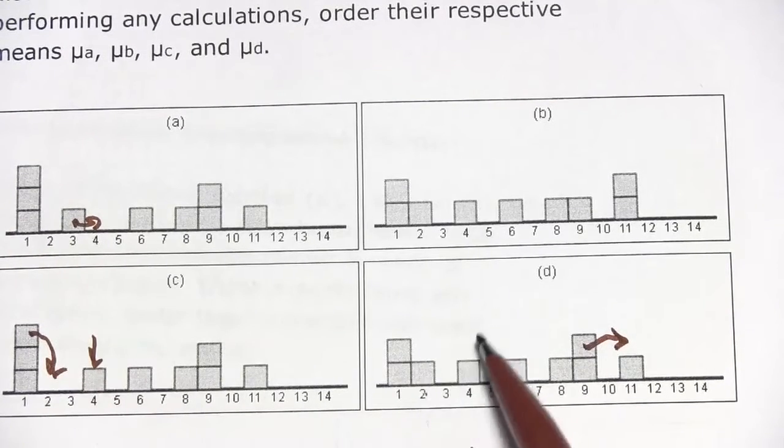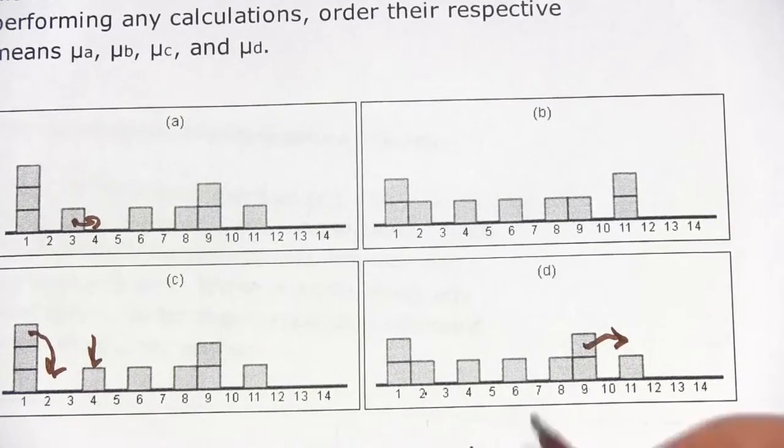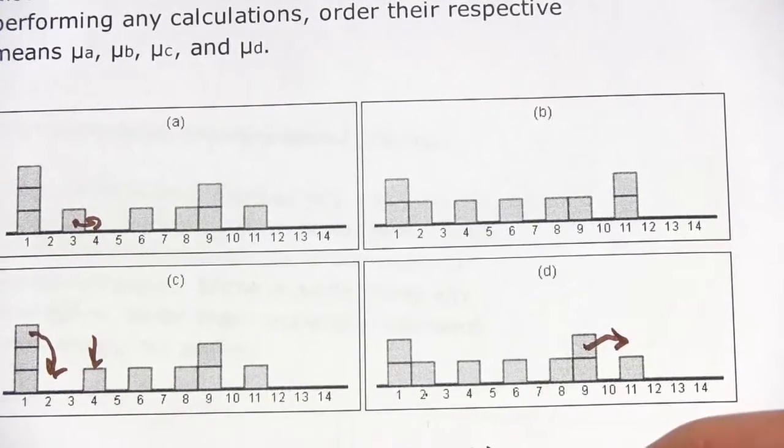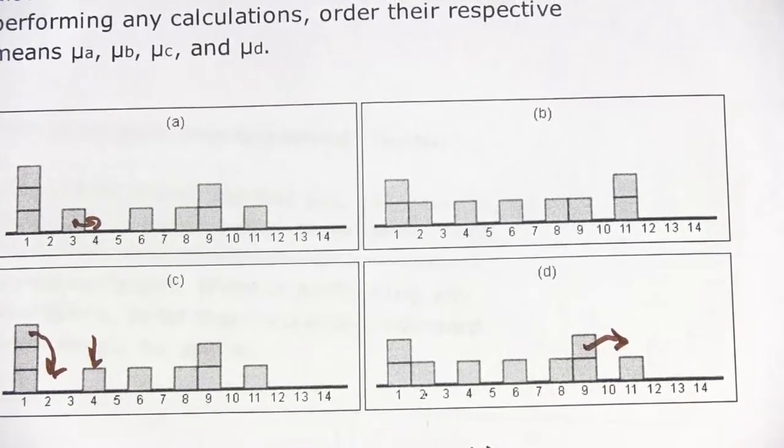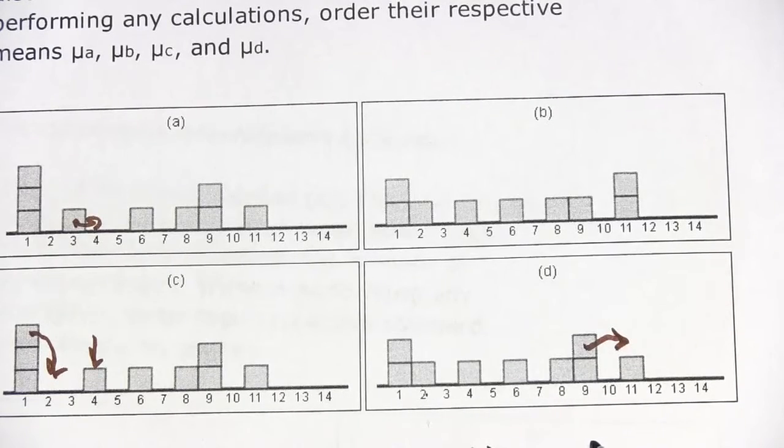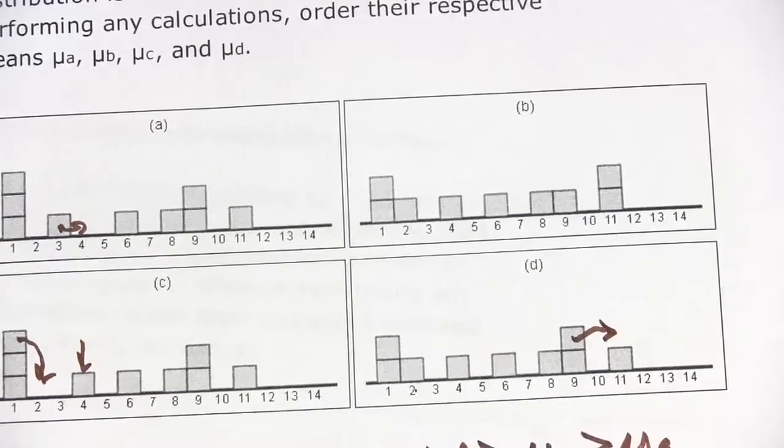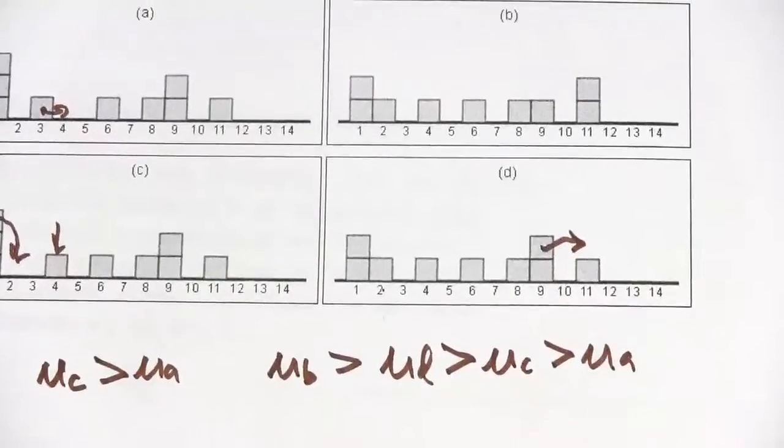So μd has got to be greater than μc, and we know μc is greater than μa. So there is our complete list from biggest here to smallest.